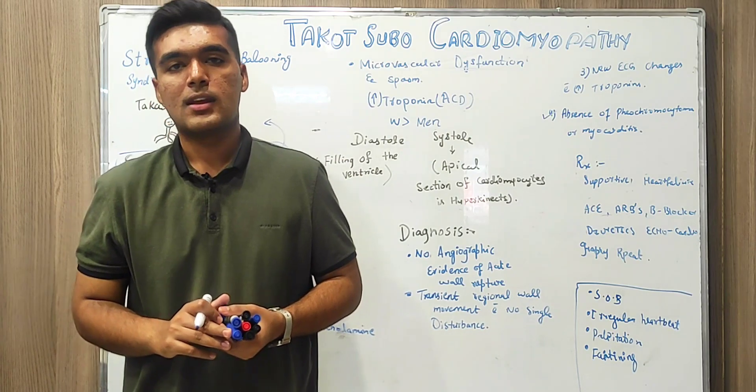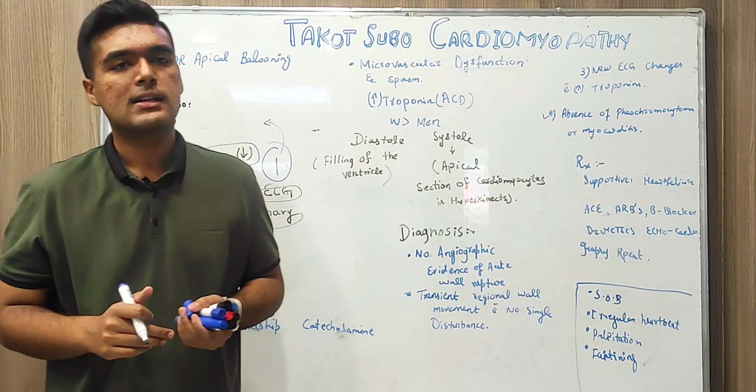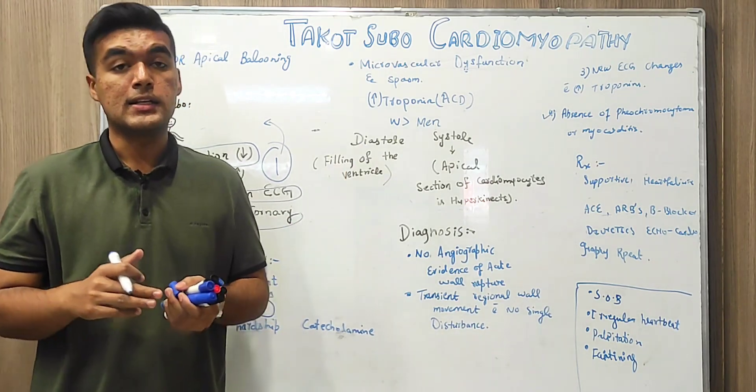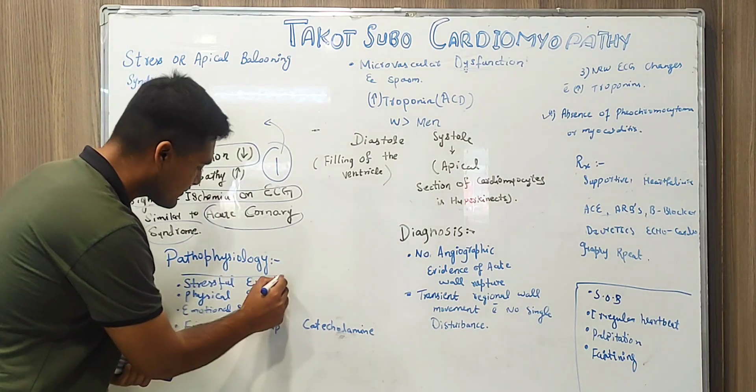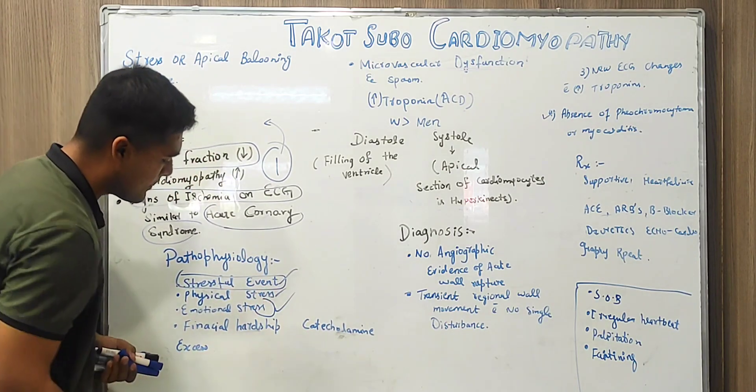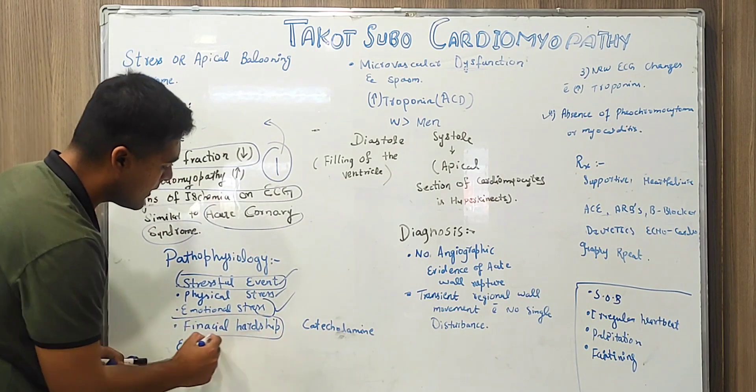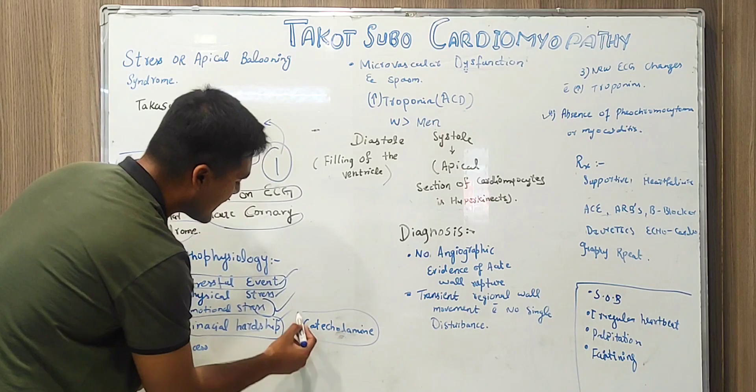Pathophysiology, the main pathophysiology and main mechanisms are still unknown but as we earlier discussed it is relevant to stress. Some physical stress might cause it, some mental stress, some emotional stress, some accident, loss of a beloved one, some financial hardships and catecholamine excess.